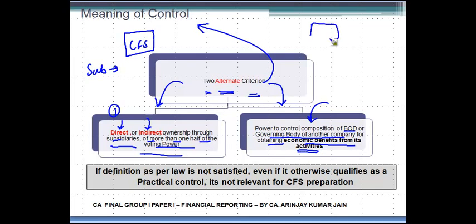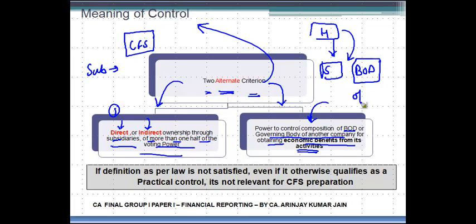Let's say there are two companies, H and S — the standard practice used here. If H controls the composition of the board of directors of S Limited, then S becomes a subsidiary of H, and H is supposed to prepare consolidated financial statements. This applies when the control of the board composition is exercised for obtaining economic benefits.